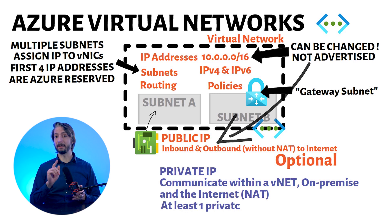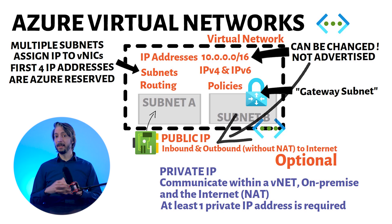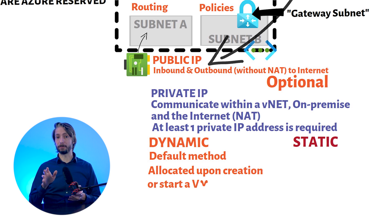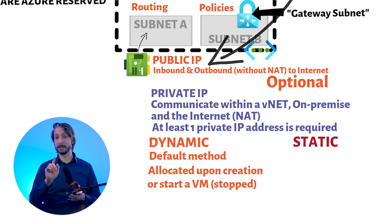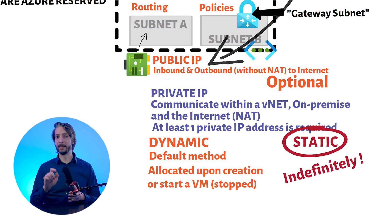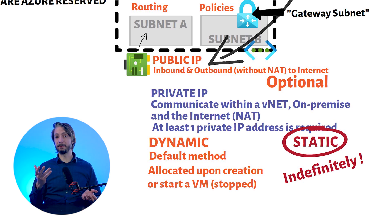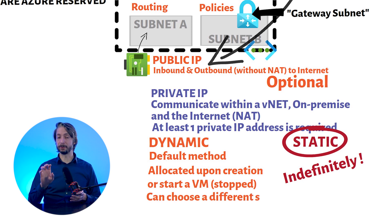You must assign at least one private IP address to each virtual machine. As with physical hosts or devices, there are two ways to allocate an IP address to a resource: dynamically or statically. In Azure, the default allocation method is dynamic, where an IP address is allocated when you create a virtual machine or start or stop a virtual machine, and is released when you stop or delete the VM. To ensure the IP address of the VM remains the same, you can set the allocation method explicitly to static. In this case, the IP address is assigned indefinitely to the VM and is released only when you delete the VM or change its allocation method to dynamic. Private IP addresses are allocated from the subnets defined within your virtual network. For a VM, you choose a subnet for the IP allocation. If a VM contains multiple NICs, you can choose a different subnet for each NIC.